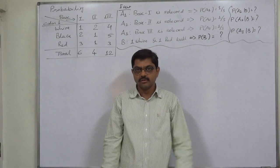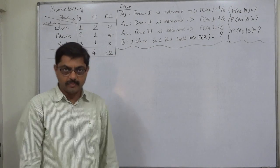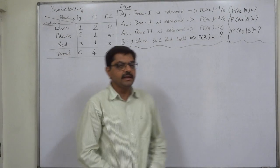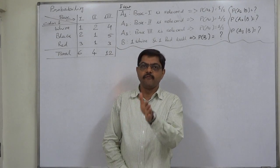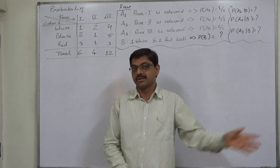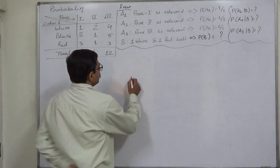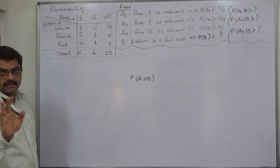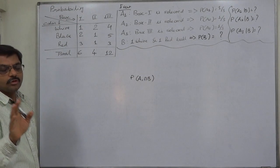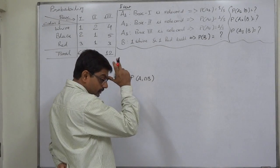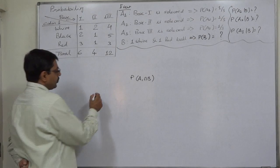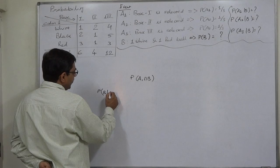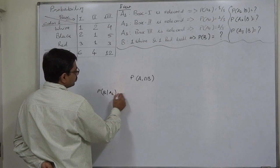What is P(B)? It is the result of addition of three joint probabilities. How can we calculate the probability of selecting the first box and two particular balls from it — that is, P(A1 ∩ B)? Direct calculation is not possible. First we should calculate the probability of selecting one white and one red ball given that box 1 is selected.